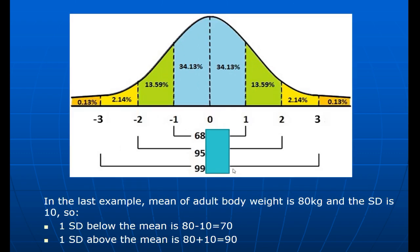Returning to the body weight example: suppose the mean is 80 and the standard deviation is 10. How do you calculate the first standard deviation? One standard deviation below the mean: 80 minus 10 equals 70. One standard deviation above: 80 plus 10 equals 90. So the first standard deviation range is between 70 and 90 kilograms.